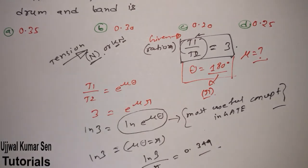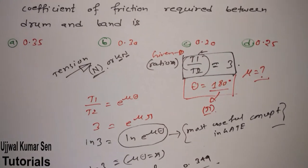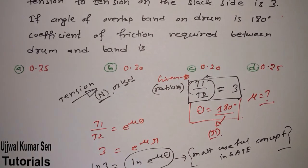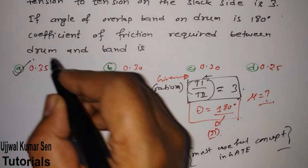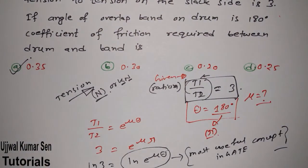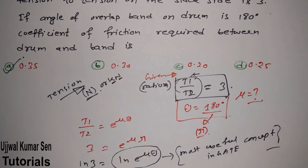So the coefficient of friction is 0.349. If you look at the options, option A is the right answer for this question.